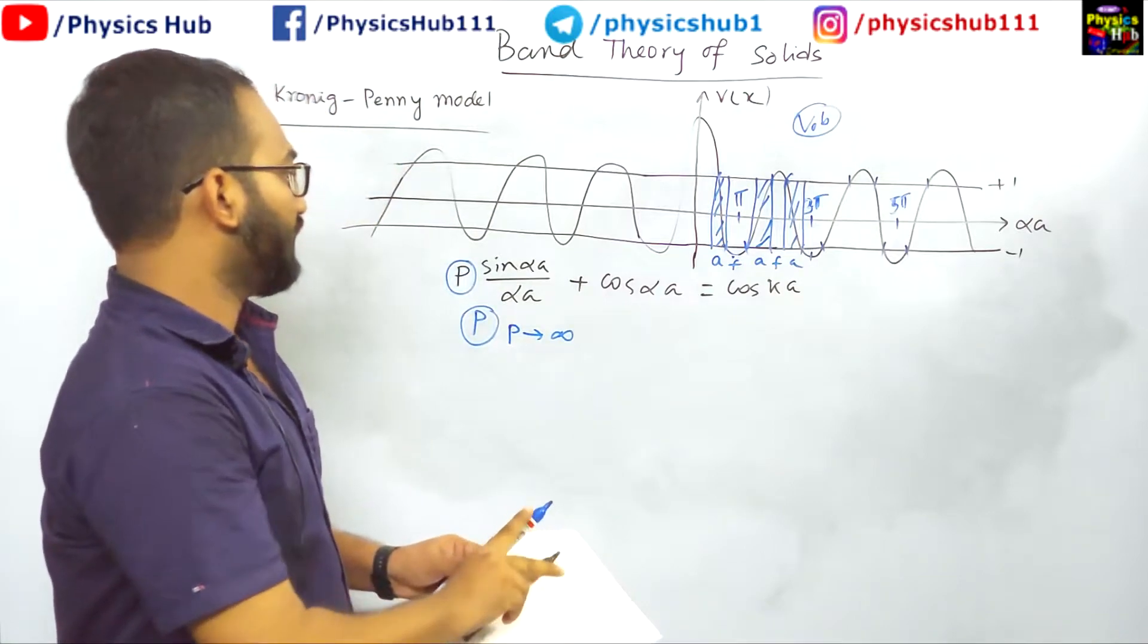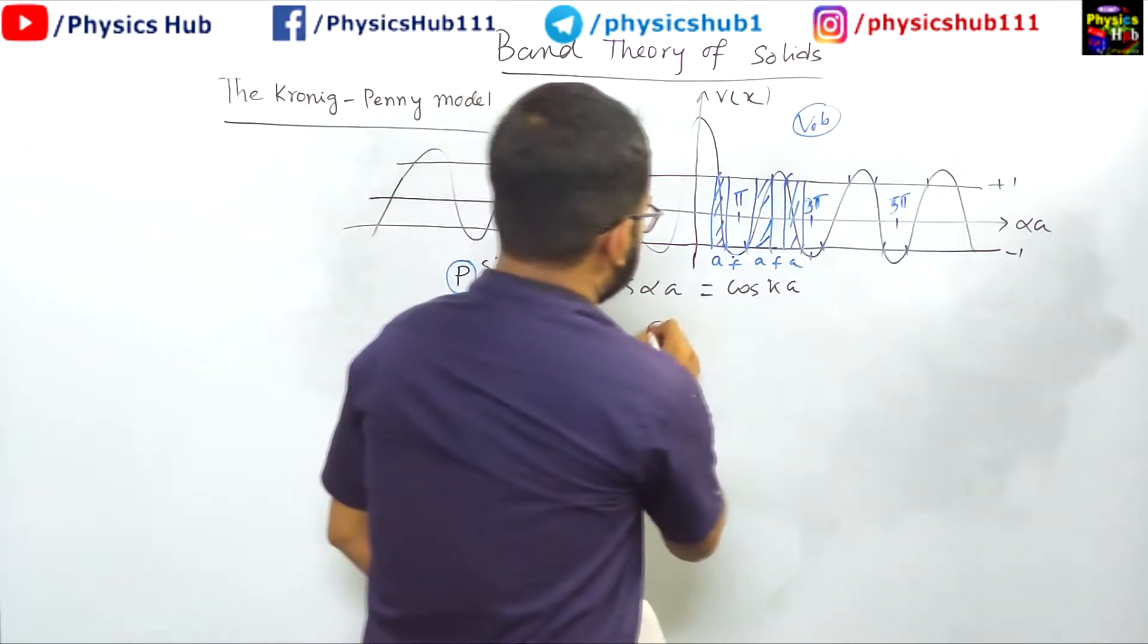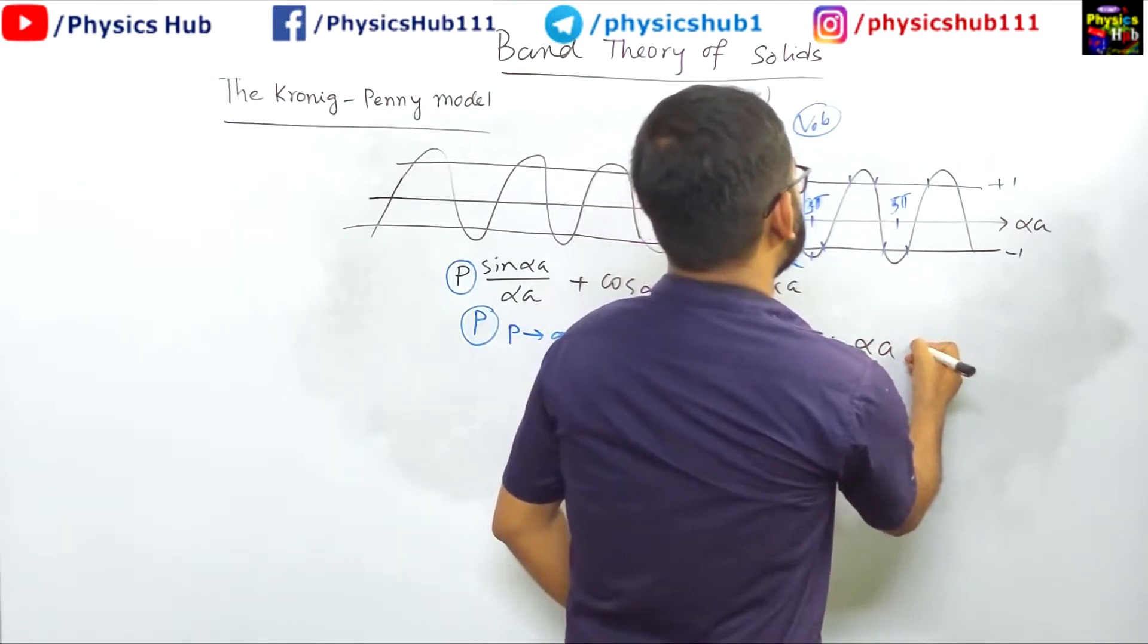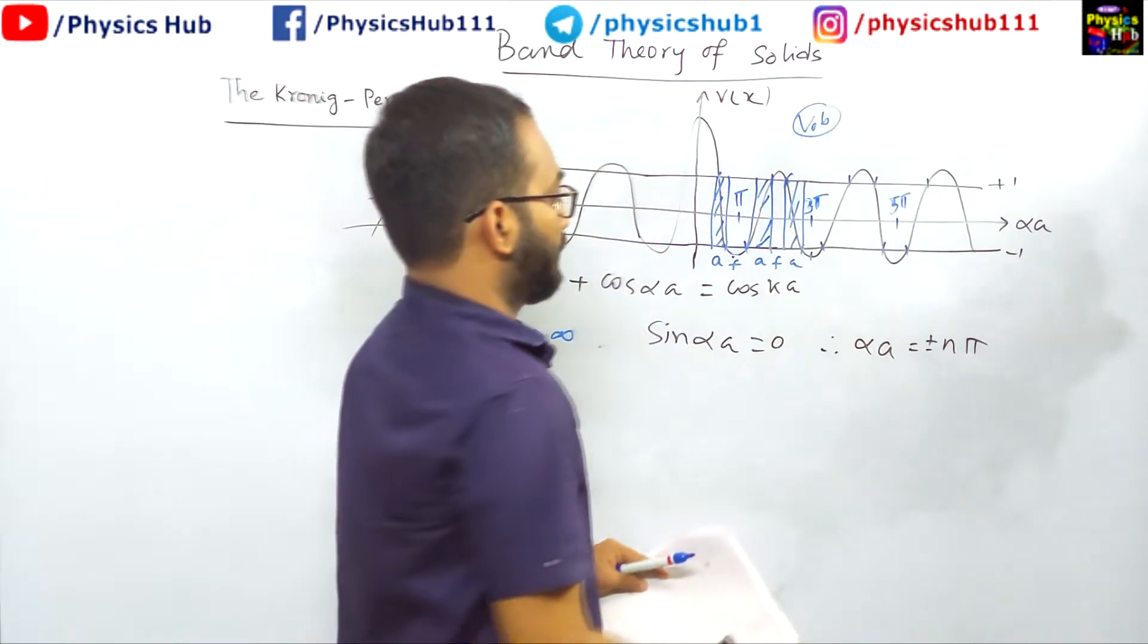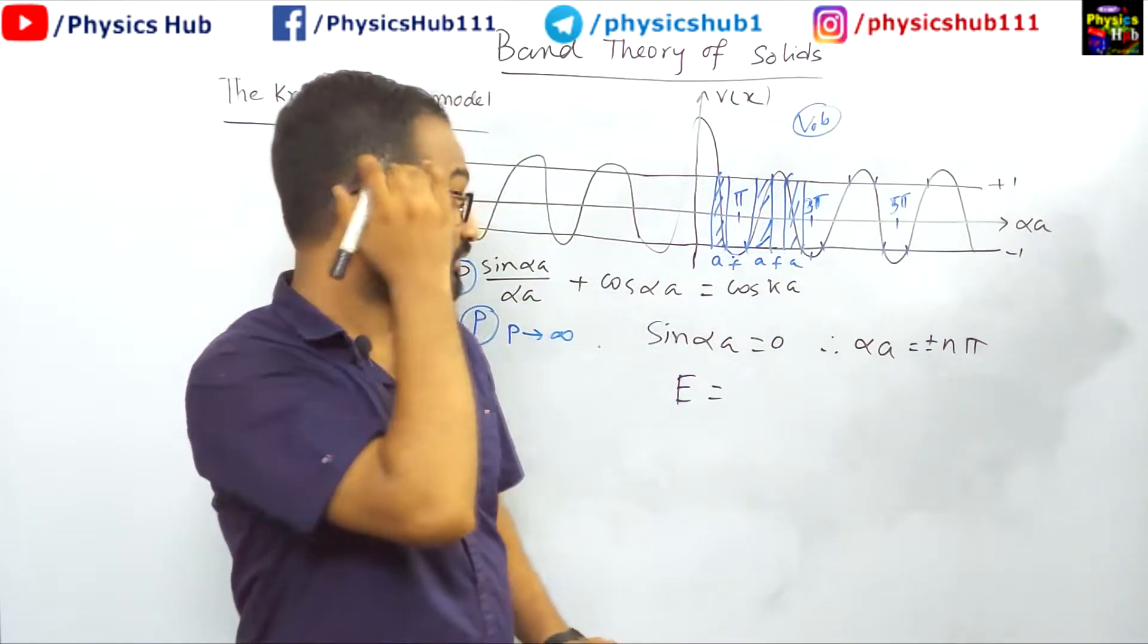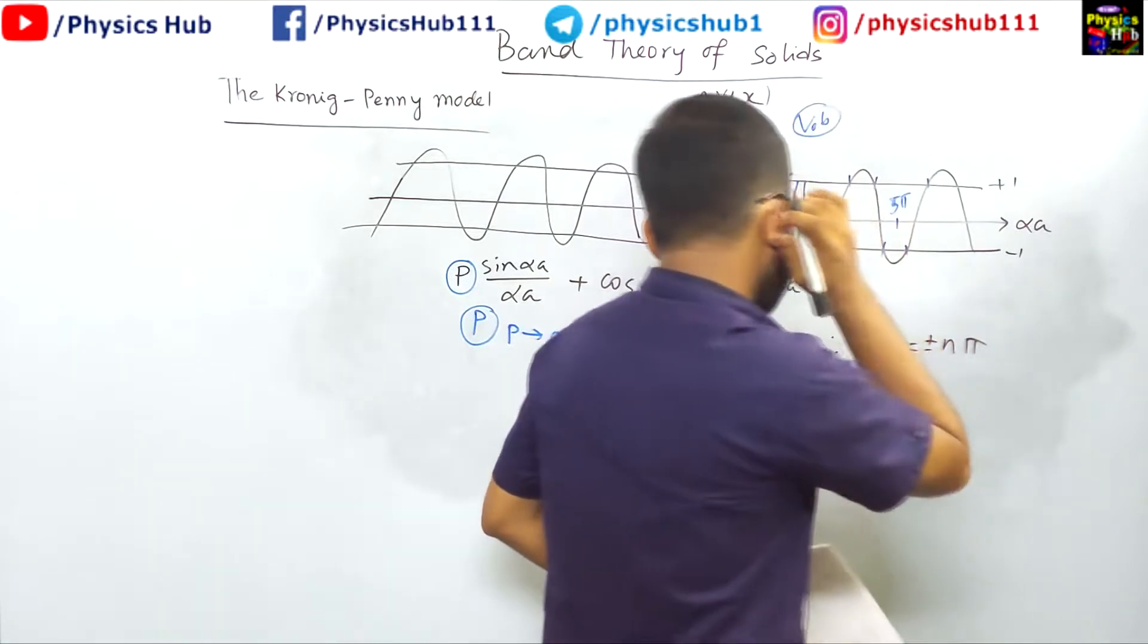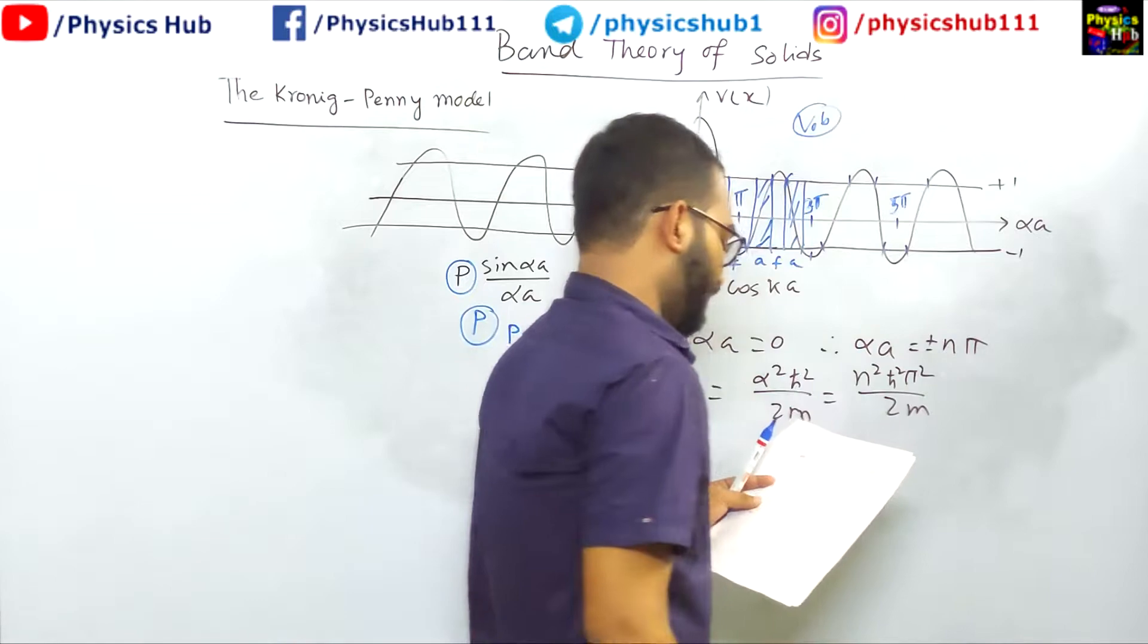So if we take, let's say, the value of p - the first case we take p to infinity. So the only solution to this equation would be, if you consider p to infinity, then this sin(αa) must be 0. This is the only solution available to it. And from this we can write sin(αa) equals 0, therefore alpha equals plus or minus nπ. And I think you know the solution: αa equals nπ. So what is the energy? You know the value of alpha: α = √(2mE/ℏ²). So E equals α²ℏ²/2m.